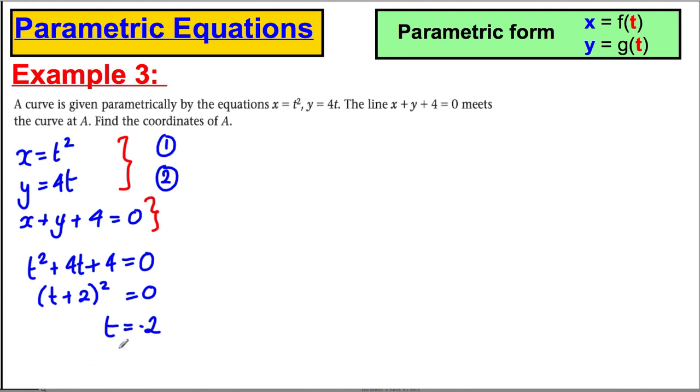Now, we've found t is negative 2. It asks us for the coordinates of A. So therefore x equals negative 2 squared. Write brackets, remember, when you're substituting in. So x equals 4, and y equals 4 multiplied by negative 2, so y equals negative 8. So therefore, the coordinates of A, we should write down, are (4, -8), and we're done.